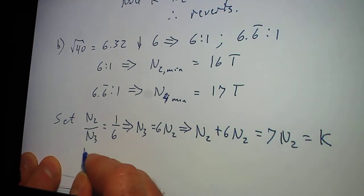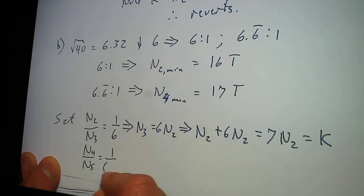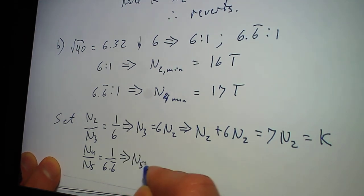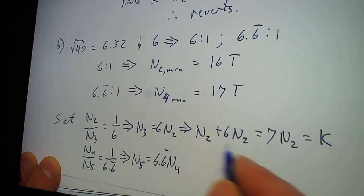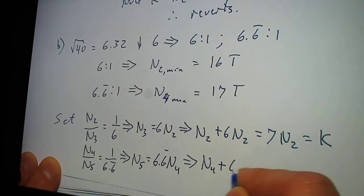And then likewise, my N4 over N5 equals 1 over 6.6. Which means that N5 equals 6.6N4,